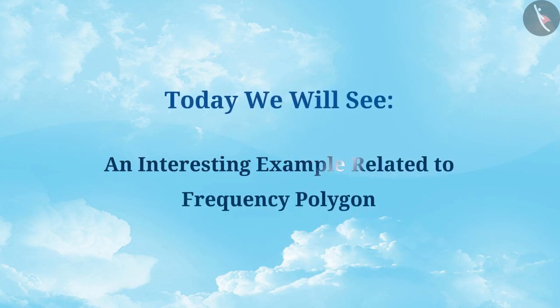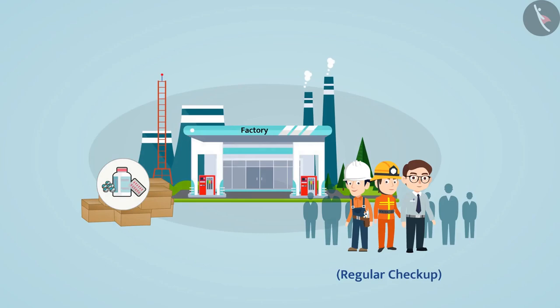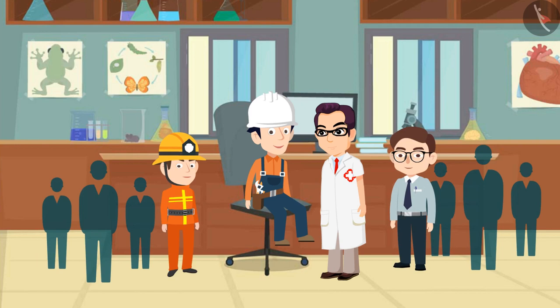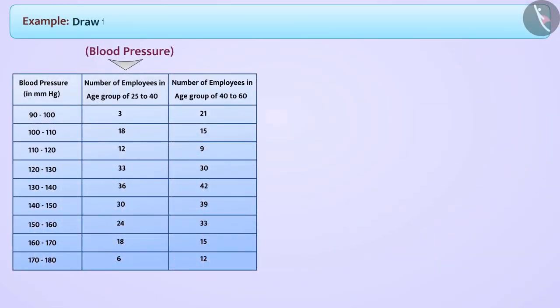We will see an interesting example related to frequency polygon. A regular checkup is done for the health of employees working in a medicine factory. A doctor was called to the factory and divided the staff into two age groups: employees aged 25 to 40 and employees aged 40 to 60. After this, the doctor examined the blood pressure of all employees and made a report. We need to draw the frequency polygon for the blood pressure of both age groups on the same graph.